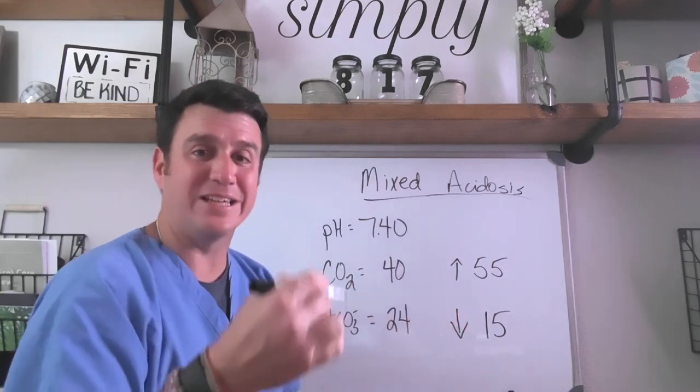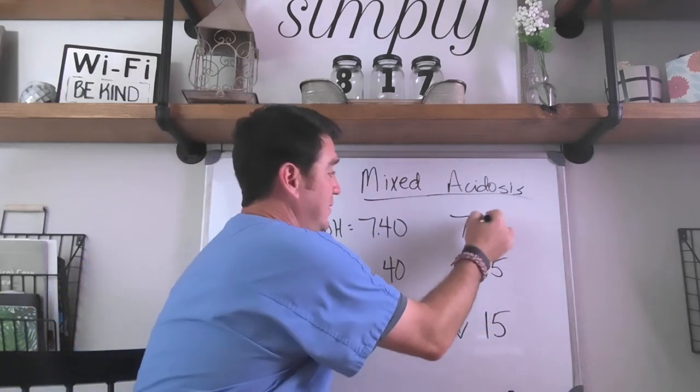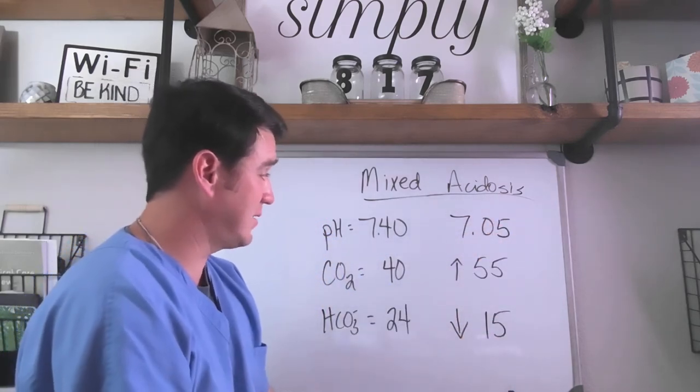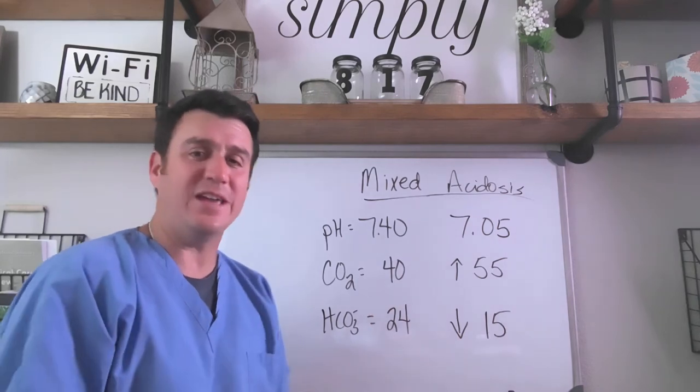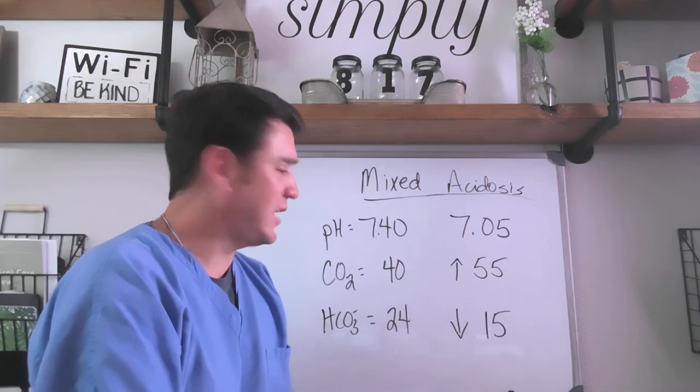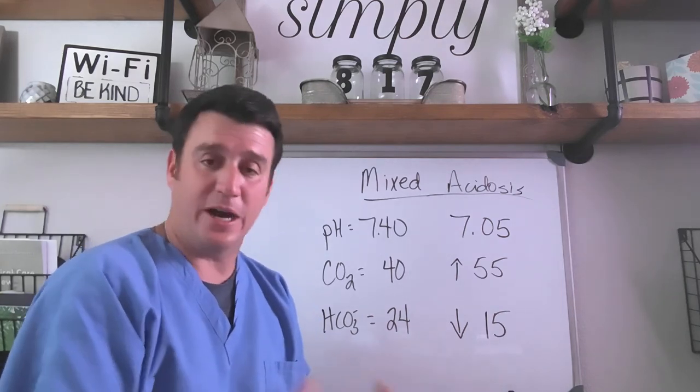This will exaggerate the acidity of your pH. So your pH is going to be very acidotic. That's what it would look like. How do we fix it? You have to ask yourself, what's causing the problem? Just like we did with the alkalosis, what is causing the problem?